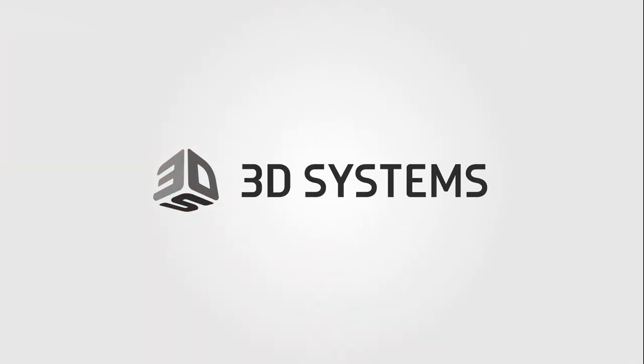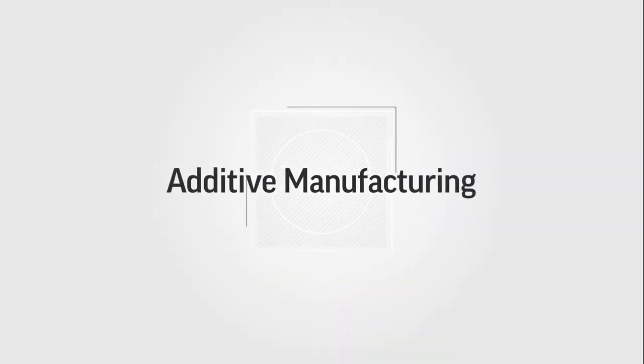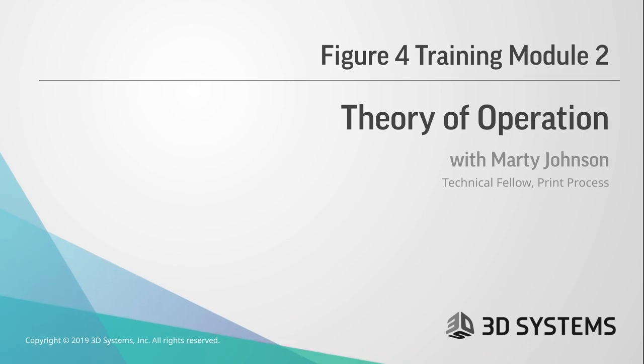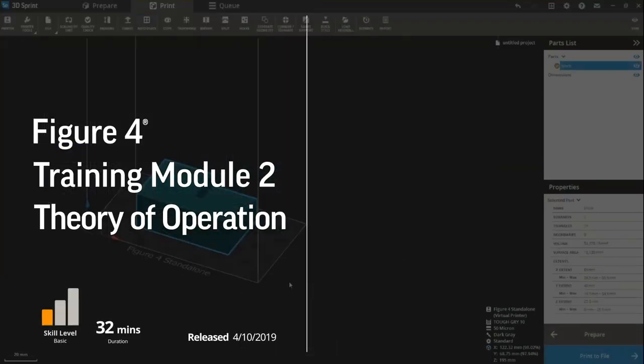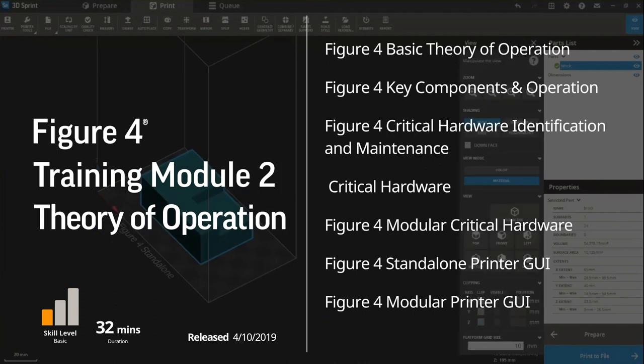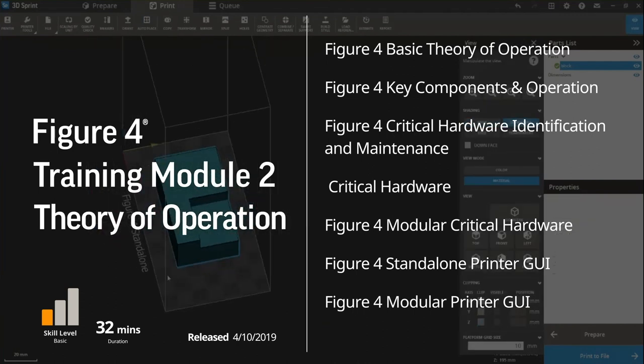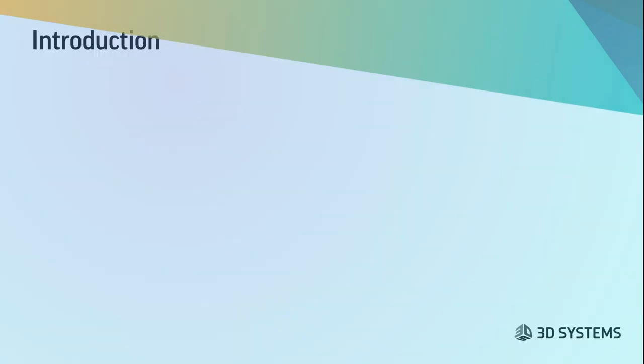Our goal was to give you the information that we have and be able to go through and set your parts up from beginning to end so that when you get your parts off they actually meet the design and intent of your application. Module two is a Figure 4 basic theory of operation.